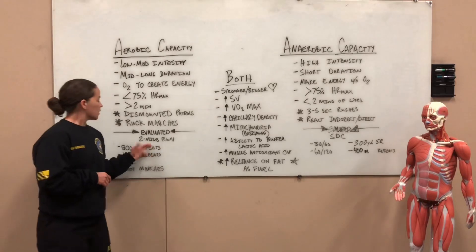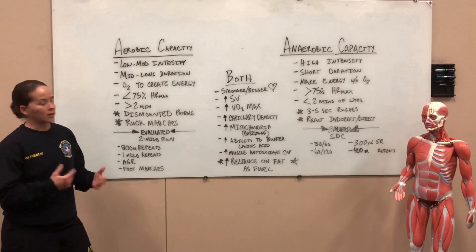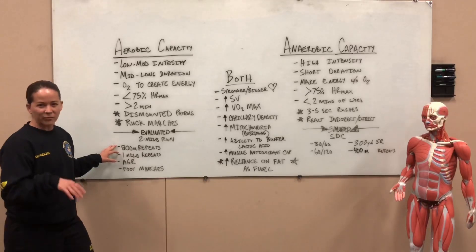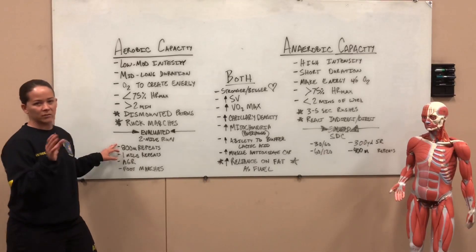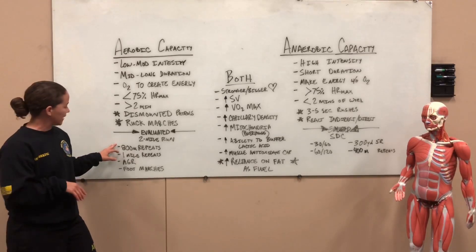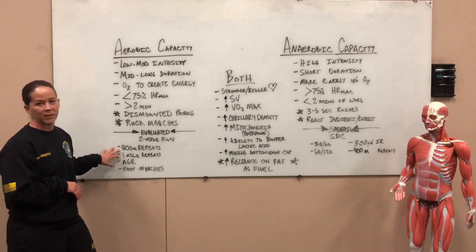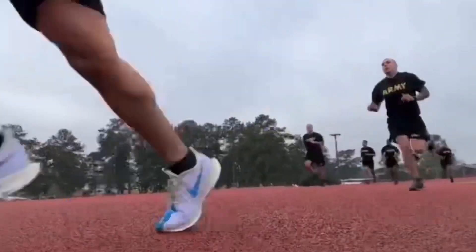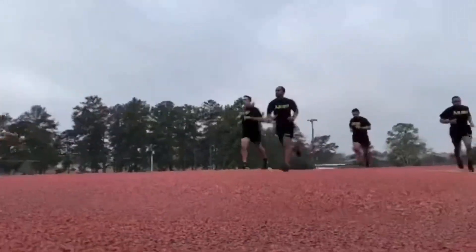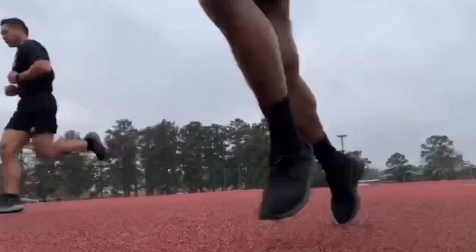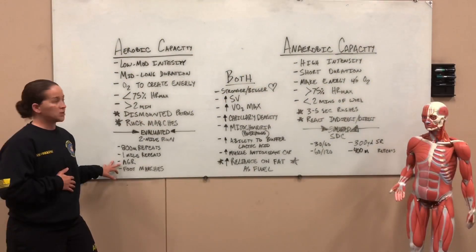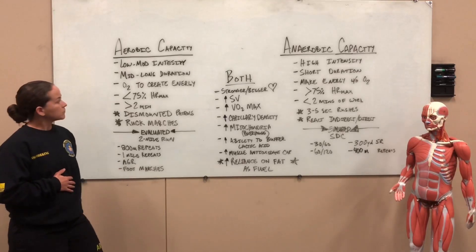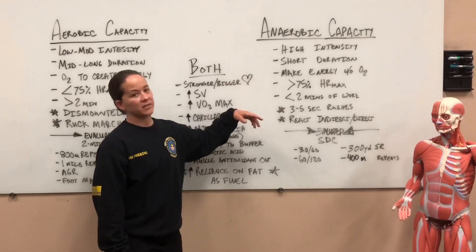So what are some things we can do to get better? We talked about going out and running for three minutes and then jogging for three minutes, but let's get more specific. How about some 800-meter repeats or mile repeats? Those ability group runs are definitely setting a solid foundation for your aerobic capacity, along with foot marches.